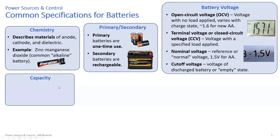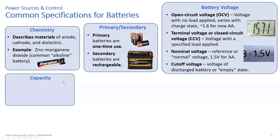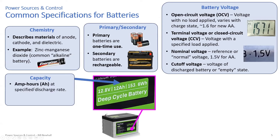There's also capacity — basically how long your battery is going to last and how much it holds. Amp-hours is a common capacity specification; you'll see on a battery label something like '12 amp-hours,' specified for a specific discharge rate. There's also watt-hours: how many hours can you operate at a specific watt power delivery from the battery. I often see amp-hours used for the batteries I work with.